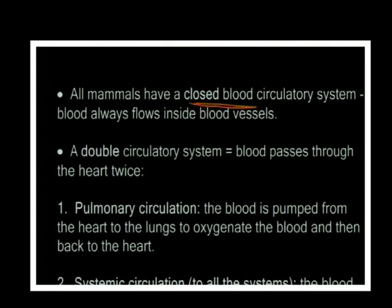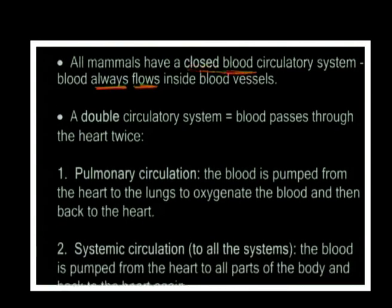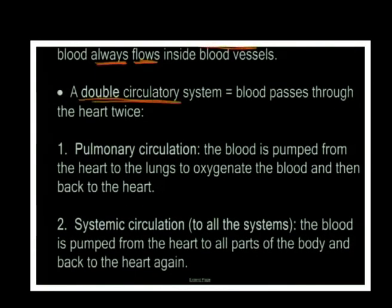All mammals have a closed blood circulatory system because blood always flows inside blood vessels. If blood comes out there's a problem - for example, haemophiliacs bleed continuously because they can't clot. In normal individuals, platelets block any breach in the vessel wall. We do not want blood to flow outside the blood vessels.